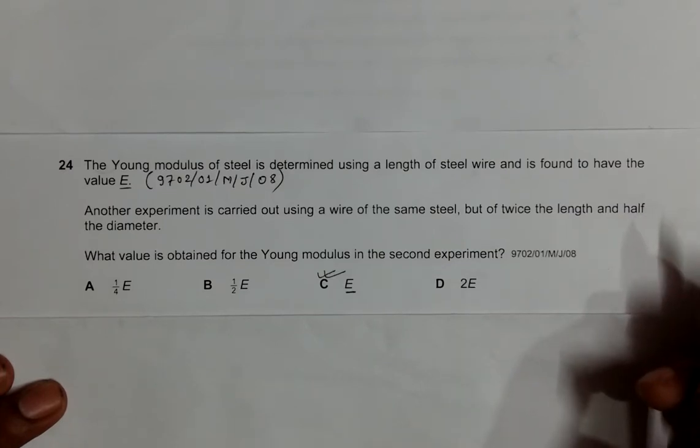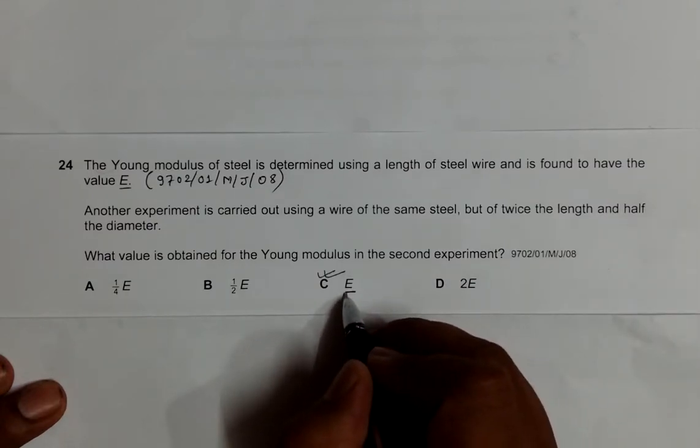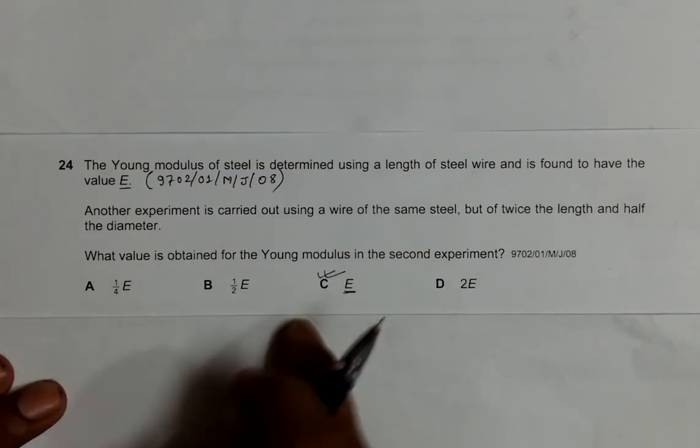and arrive at some other values. But what you have to remember is the value of Young's modulus should be the same at any cost in this experiment. So the choice is C.